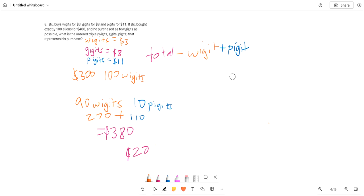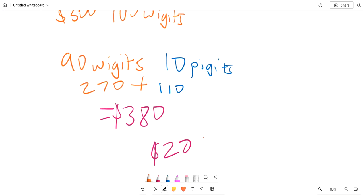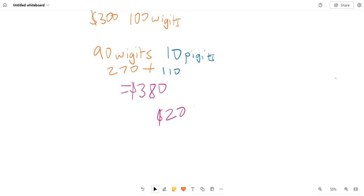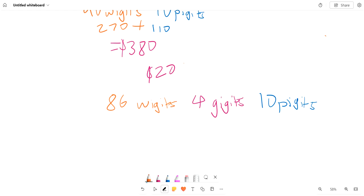From here we can see that we can replace 4 widgets with 4 Gidgets. And we can see that this means that we have 86 widgets, 4 Gidgets, and 10 Pidgets. So this is just 258 plus 32, because every Gidget is worth $8, plus 110.